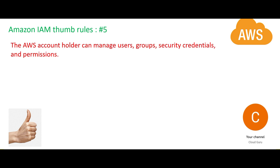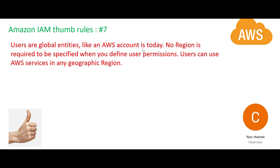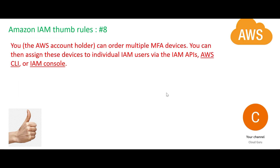Only the AWS account holder can manage these things. You can also organize users and groups in a hierarchy, called a path, so it is more manageable. IAM is a global service — when you create it, you don't have to select a region. Other services like EC2 and S3 require a region, but for IAM you don't — it works across all regions.